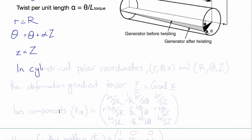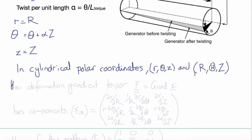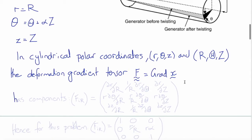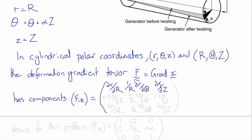Calling the twist per unit length alpha and writing the displacements in polar coordinates, the deformed radius equals the undeformed radius, deformed theta equals undeformed theta plus an increment proportional to the Z coordinate times alpha, and deformed Z equals undeformed Z. To go further, we need to write the deformation gradient tensor in cylindrical polar coordinates, where deformed coordinates are little r, theta, z, and undeformed coordinates are capital R, capital Theta, capital Z. The deformation gradient tensor would no longer just be partial derivatives. The proper definition in polar coordinates of grad x is such that component F_ir includes terms like del(r)/del(R), and instead of del(r)/del(Theta), it becomes (1/R) del(r)/del(Theta), because an element of length in the circumferential direction is r dTheta.